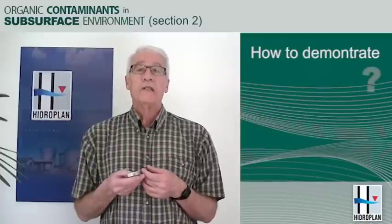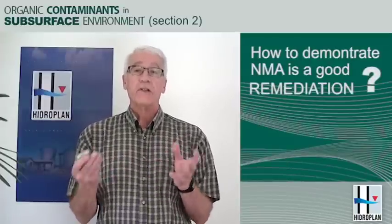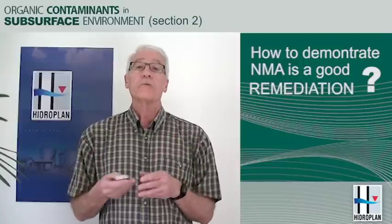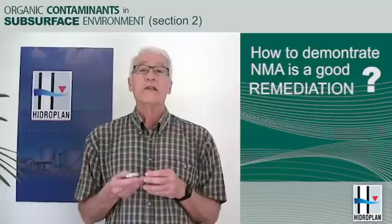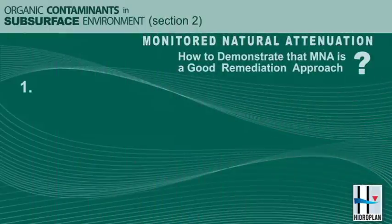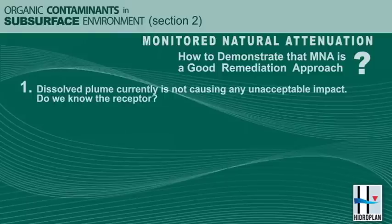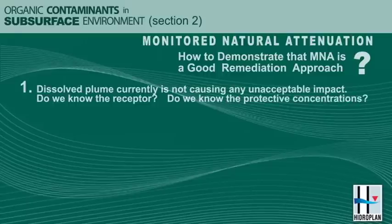How would you go about demonstrating that monitored natural attenuation is a good remediation approach? We have a dissolved plume heading towards a receptor. The first thing is we have to decide that the dissolved plume currently is not causing any contamination — if it has already reached the well, it's too late. That requires us to know the receptor and the concentrations that are protective of it, so that has to be defined at a very early stage.